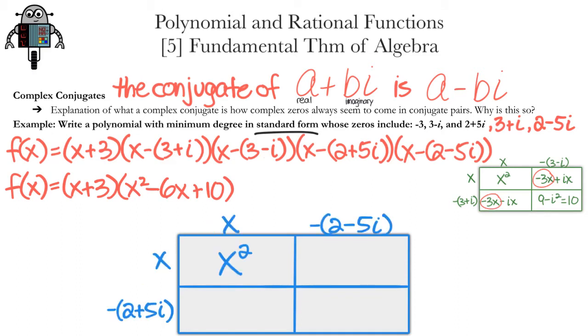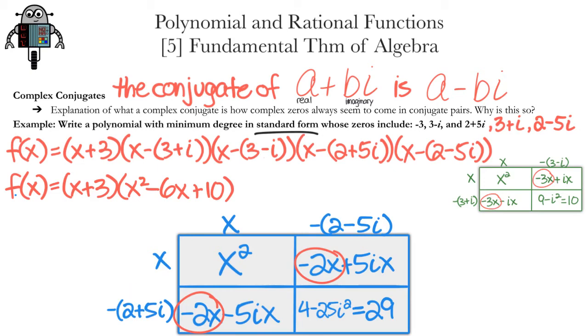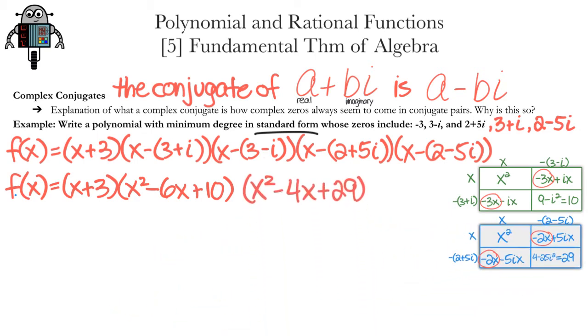x times x is x squared. In the top right box, we have negative 2x plus 5ix. In the bottom left box, we have negative 2x minus 5ix. And for the bottom right box, the negatives multiply to a positive. Then we're left with a difference in two squares. 4 minus 25i squared. Since i squared is negative 1, we have 4 plus 25, which is 29. Also notice that 5ix minus 5ix is 0. The product of these two binomials, with binomials within, is the sum of all the terms inside. And that's x² - 4x + 29.